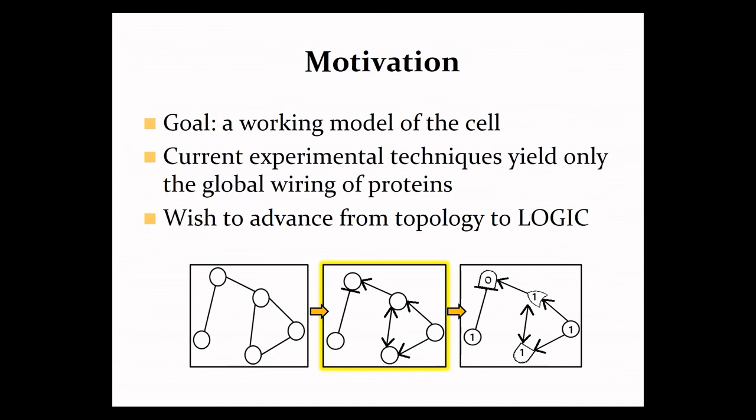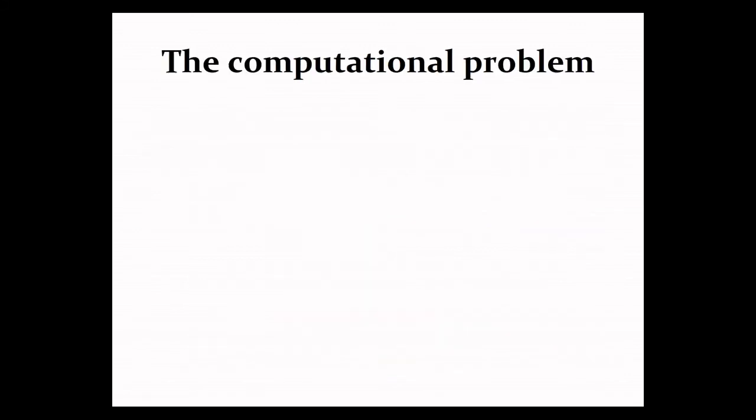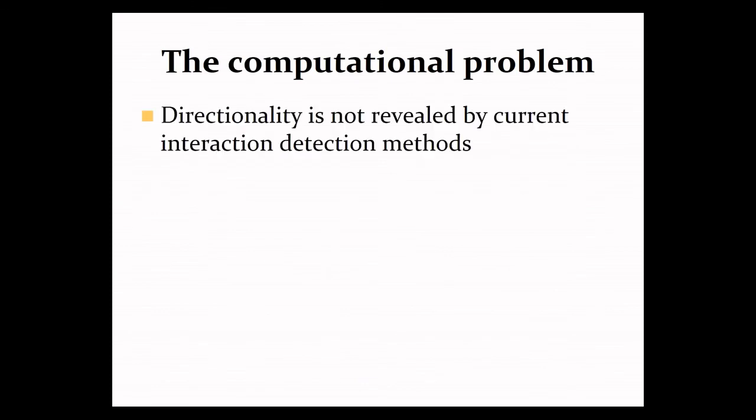So if we are to go from the measured interactions to some mechanistic, for example, a logical model, we need to understand what are the directions in which the signals flow in the network. The problem, as I mentioned, is that directionality is not revealed by common large-scale interaction detection methods, which means that we have to infer them computationally using indirect information.